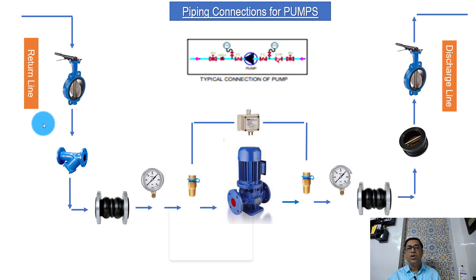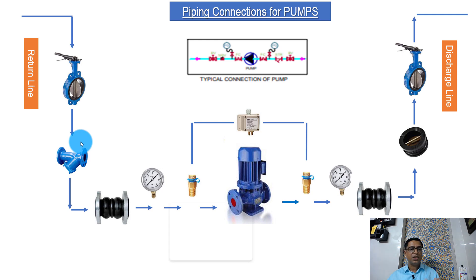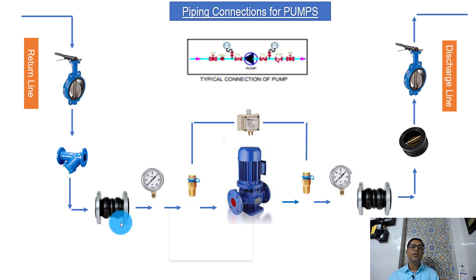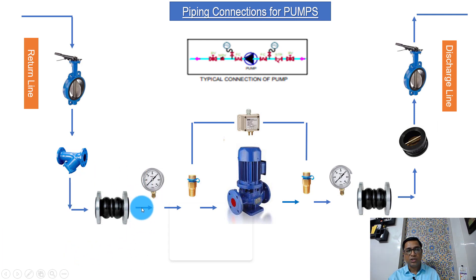Then we get a Y-strainer. What is the purpose of the Y-strainer? To take out the dirt and particles which are present in the flowing water. It has a mesh which actually captures all those particles; we can clean that mesh, remove the particles, and keep the water clean. Then we have a flexible connection. What is the use of a flexible connection? To avoid — or rather reduce — the vibration coming out of the pump to the pipes, because pipes go across the entire building and they will carry that vibration to the structure, impacting the building.